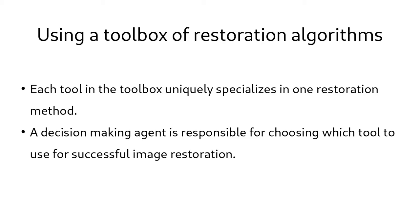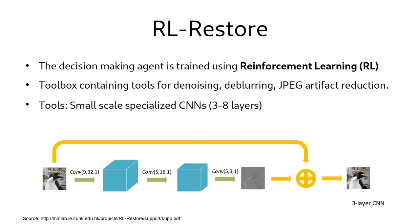So this is where the RL restore method comes in. RL restore is an image restoration algorithm that consists of two components. One is a decision making agent whereas the other is a toolbox that contains small specialized CNNs that each perform a particular kind of restoration. This decision making agent is trained using reinforcement learning to decide which tools to pick and which sequence of tools to pick given an input image.